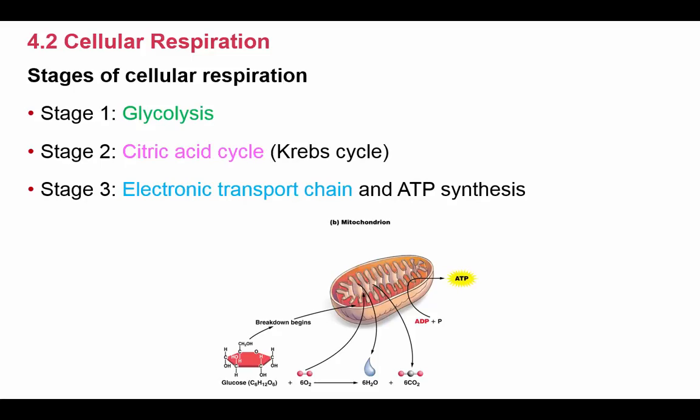There are three main stages of cellular respiration: Stage 1 is glycolysis, Stage 2 is the citric acid cycle, and Stage 3 is the electron transport chain.